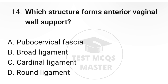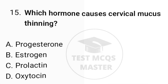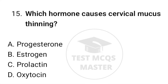Question number fourteen: which structure forms the anterior vaginal wall support? The correct option is A, pubocervical fascia. Question number fifteen: which hormone causes cervical mucus thinning? The correct option is B, estrogen.